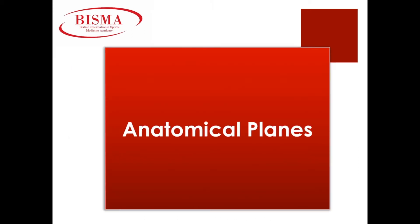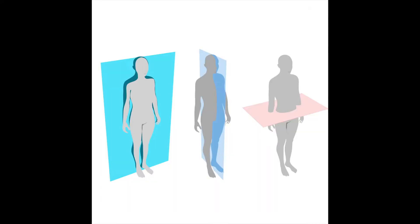Let's begin with our anatomical planes. When studying level 3 anatomy and physiology, we focus on three main planes of movement: frontal plane, sagittal plane, and transverse plane. These anatomical planes help to clarify much of the terminology used when discussing body movements, muscle actions, as well as the names and locations of muscles.